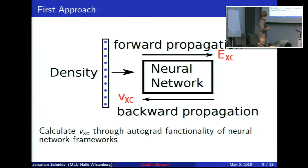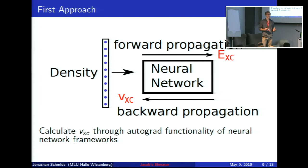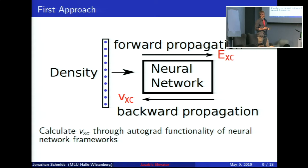Our approach is to take the density as the input for the neural network, propagate forward to get a scalar output which is hopefully the exchange-correlation energy, and then use the autograd functionality — provided by all modern neural network frameworks — to calculate the derivative of this scalar function automatically. We use that to calculate the exchange-correlation potential by propagating backwards to the input. In this simple way we can get a physically consistent exchange-correlation energy and potential together.